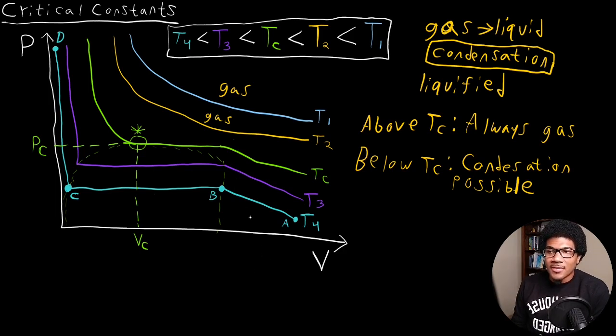So let's take this T4 isotherm, for example. So at T4, which is the lowest temperature, it's below TC. So we know that condensation is possible. At this first point from A to B, you'll notice that as the volume is constricted a little bit, we do see an increase in pressure that fits with Boyle's law. So this is actually a gas in this region. So from A to B, you do have a gas sample.